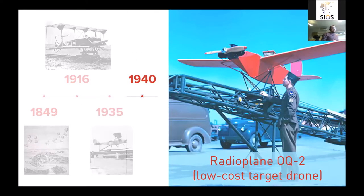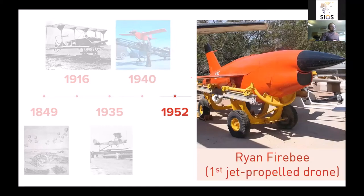In the scope of World War Two, the Americans developed the low-cost radio plane, produced in very high numbers, again mostly used for target practice. The Fire Bee was developed as the first jet-propelled drone, again used by the military — initially for target practice, but eventually they put cameras on it, and that's when using drones for surveillance or remote sensing really took off.